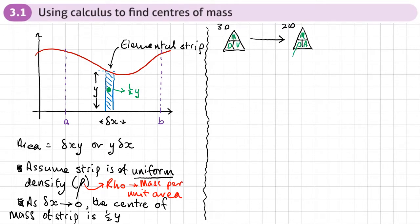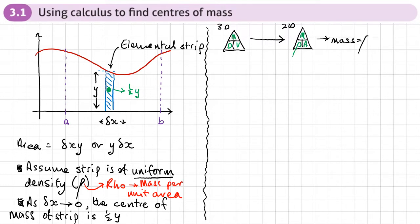Before we use calculus, a note about how rho fits into what we know. In three dimensions, density is mass over volume, so mass equals density times volume. When we move to a two-dimensional shape like a lamina, rho is mass per unit area — similar to density being mass per unit volume. So we can say mass equals rho times area.